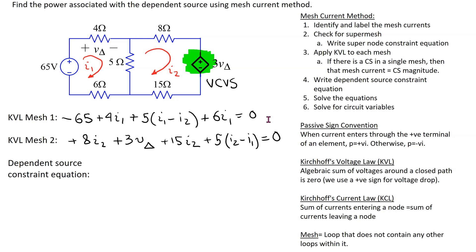Whenever a circuit has a dependent source, we need to write the dependent source constraint equation, relating the controlling variable to the mesh currents. We need to relate v_delta to i1 and i2. V_delta is the voltage drop across the 4-ohm resistor, and only mesh current i1 flows through it. Since i1 enters the positive terminal, v_delta equals 4*i1 with a positive sign.